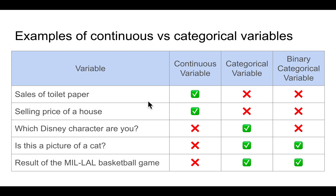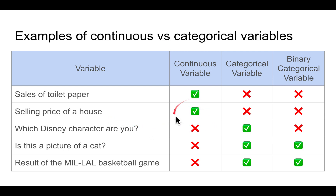Let's take a look at a few examples. If you want to keep track of how many toilet paper rolls were sold by a supermarket as people scrambled to hoard toilet paper during the coronavirus crisis, this is basically a continuous variable. If you keep track of the price at which a house was sold, that's also a continuous variable.